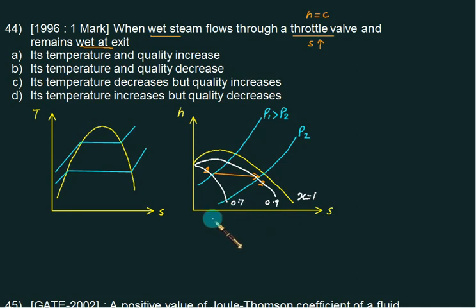Because of this, we can conclude that the dryness fraction improves. If you go to the T-S diagram, we have P1 and P2, and since the entropy is increasing and enthalpy is constant, the process is represented from 1 to 2, which is the irreversible process.